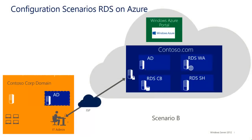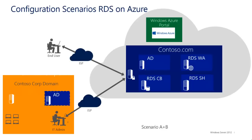There could be a Scenario B where the end user is having an on-premises active directory domain as well as he is trying to create active directory on the Azure based cloud. There could be a third scenario which is a combination of Scenario A and B, where the end customer will be having on-premises active directory as well as wanting his end users to access RDS on Azure over the internet.